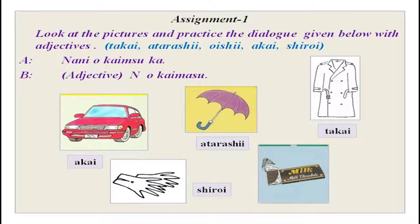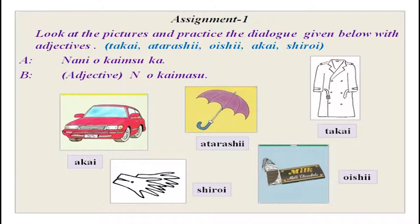And then you have chocolates — chokoreeto — and oishii. So nani wo kaimasu ka? Watashi wa is of course understood. The subject is always understood and during conversation you can actually omit the subject. So oishii chokoreeto wo kaimasu. Now you can practice that.